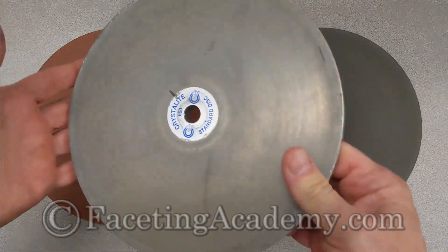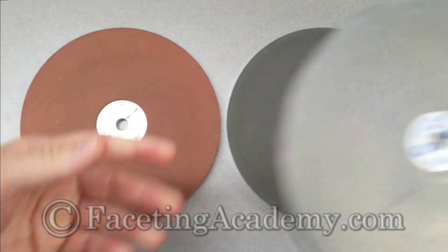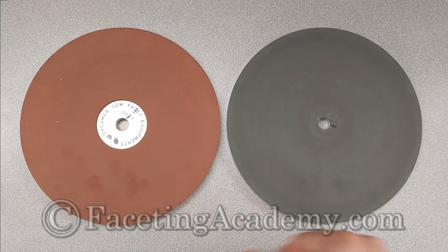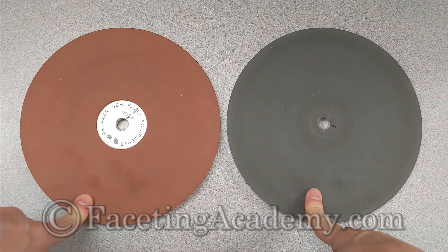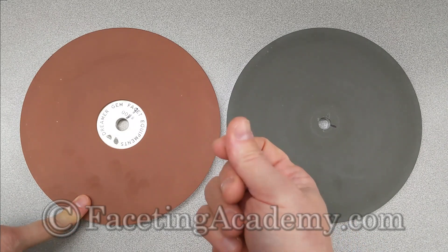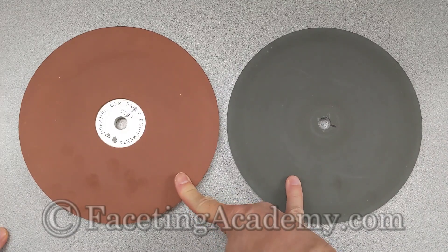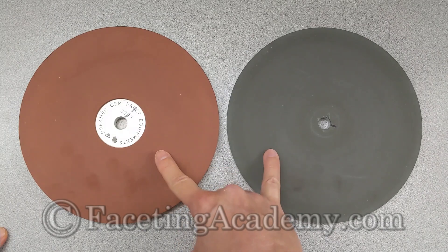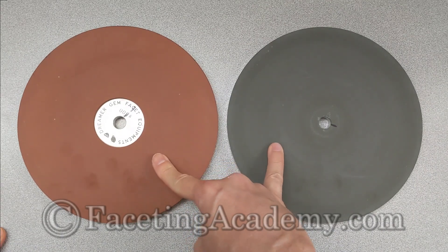So we still need this 600 lap, this metal plated type lap. We still need this in our stable and also because it tends to be sort of a workhorse for stock removal. Now to this, which of the Resintech laps would I recommend adding? To the extent you have the wallet to support it, because these laps are expensive, although I managed to completely justify the cost of both of these laps, for me to have both of them in my stable.